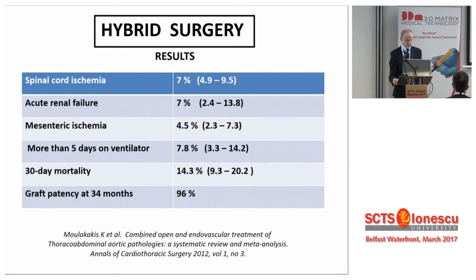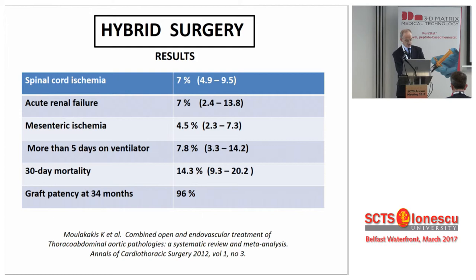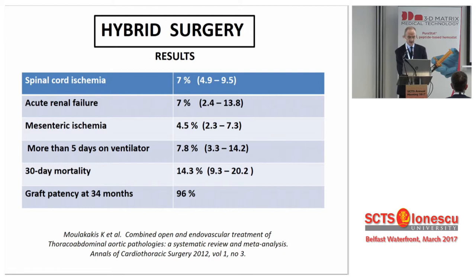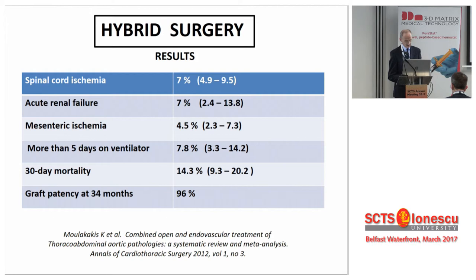To give you an idea about the results of hybrid surgery in thoracoabdominal aneurysms, I refer to the meta-analysis of Moulakakis in the Annals of Cardiothoracic Surgery. In his study of about 528 patients with a mean follow-up of 34 months, spinal cord ischemia and acute renal failure incidence was about 7%, mesenteric ischemia 4.5%, prolonged ventilation 8%, and 30-day mortality 14%. Patency of the grafts after more than two years was almost 100%. His conclusions are clear: although the hybrid technique provides a less invasive approach, it is still associated with considerable morbidity and mortality. High-risk patients unfit to withstand open repair are equally likely to suffer significant complications with the hybrid procedure.